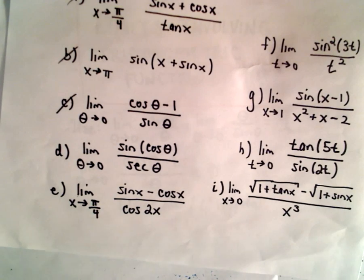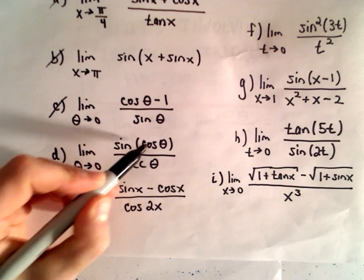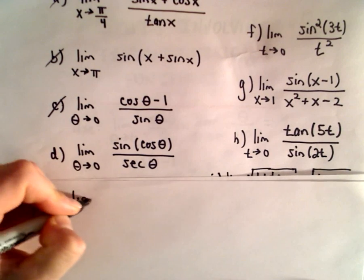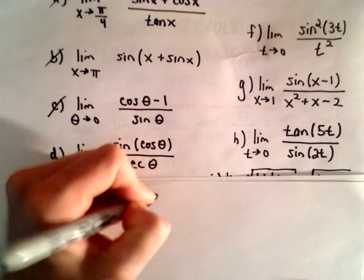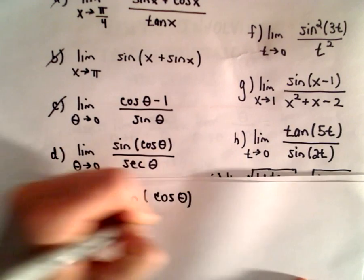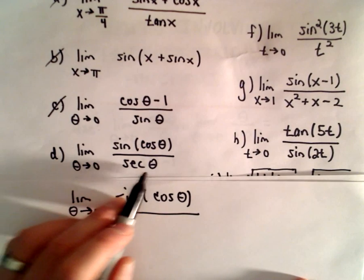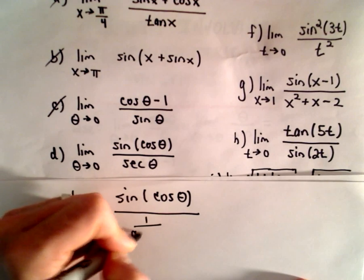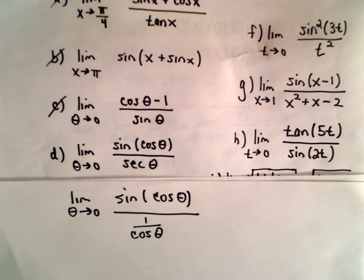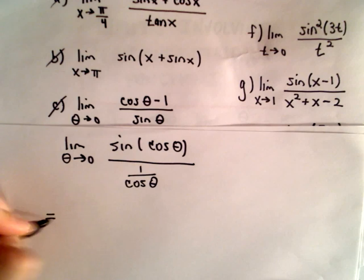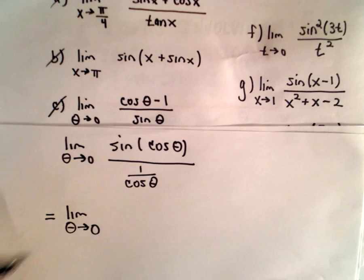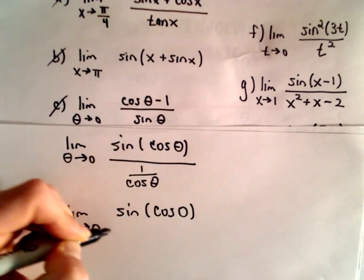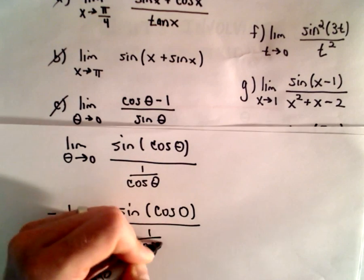Part D: we've got the limit as theta approaches 0 of sine of cosine theta divided by secant theta. The first thing I'm going to do is substitute theta equals 0. But before thinking about secant of 0, I'll note that secant is the same thing as 1 over cosine. So substituting in theta equals 0, we'll have sine of cosine of 0, divided by 1 over cosine of 0.